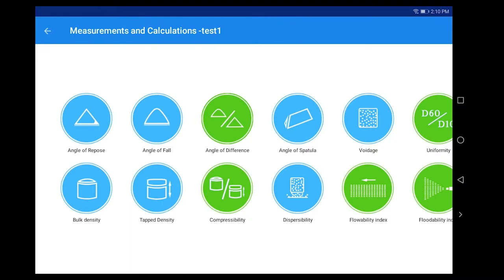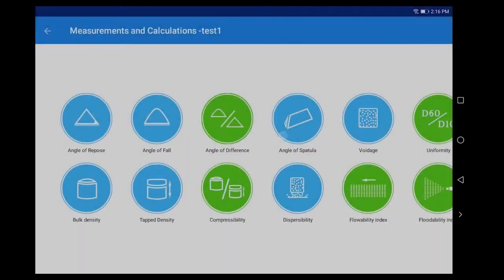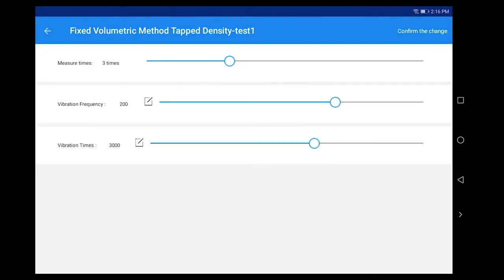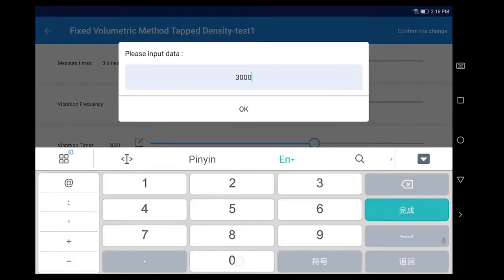Click Tap Density. Click Fixed Volumetric Method. Click Options. Set Measure Times, Vibration Frequency, Vibration Times as required.